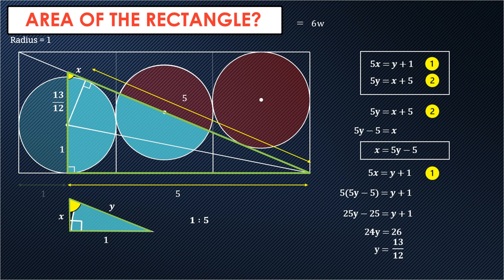And now we can just add the radius to 13 over 12 for the height of this triangle. So that is two and one-twelfth.